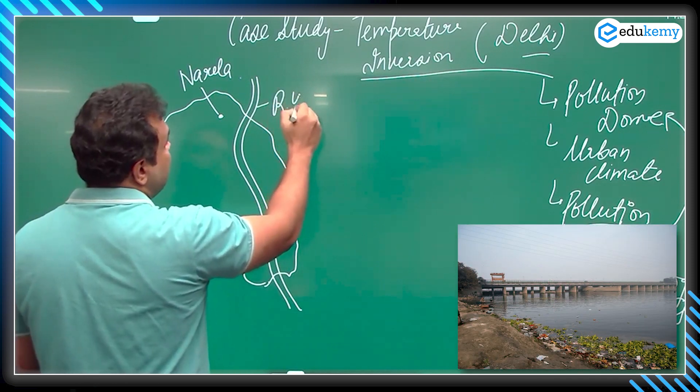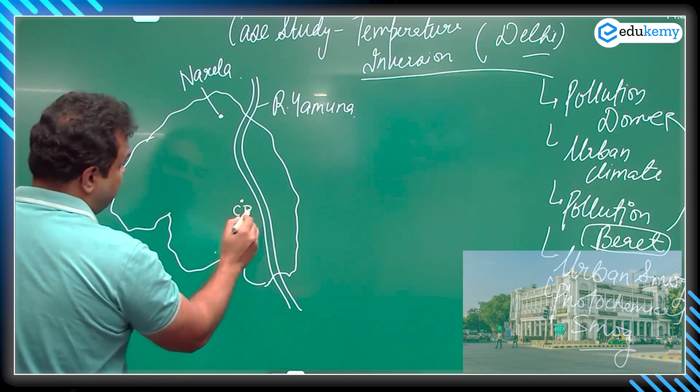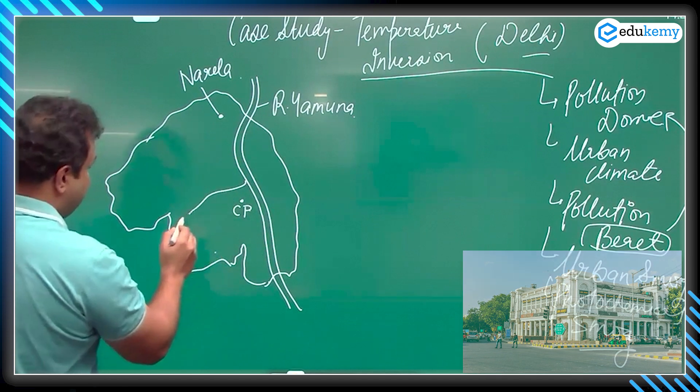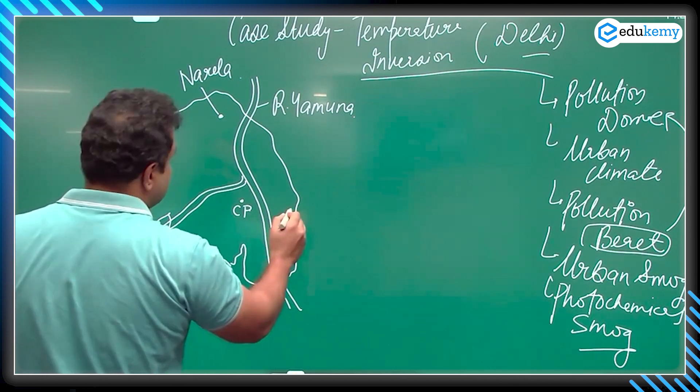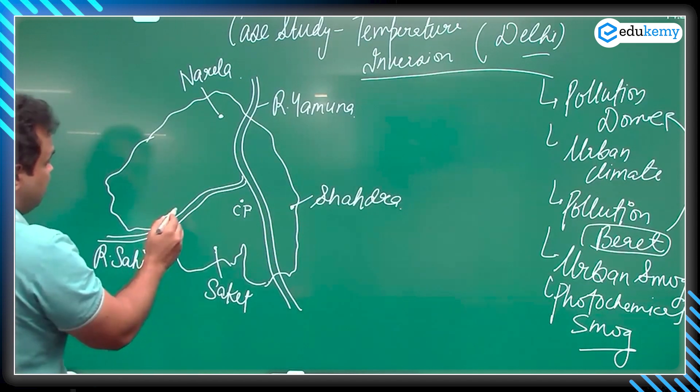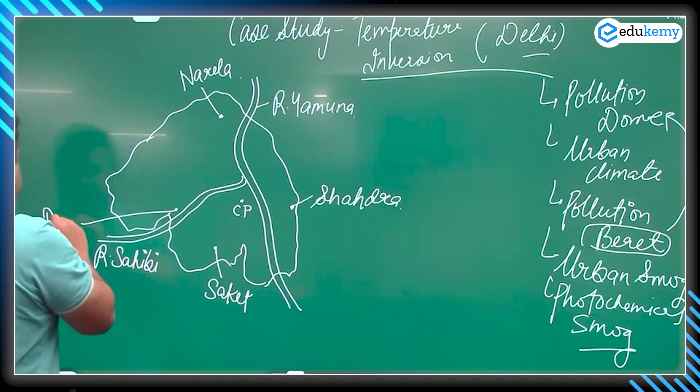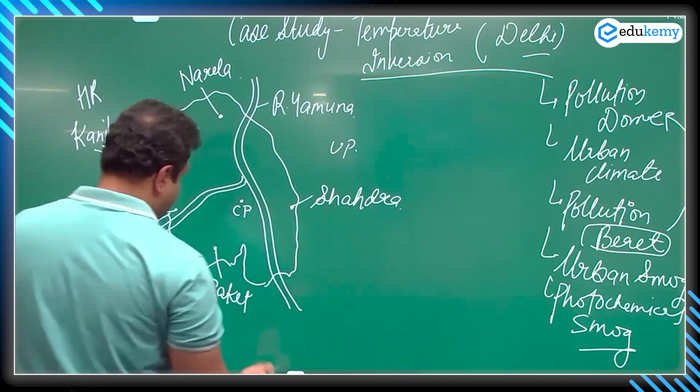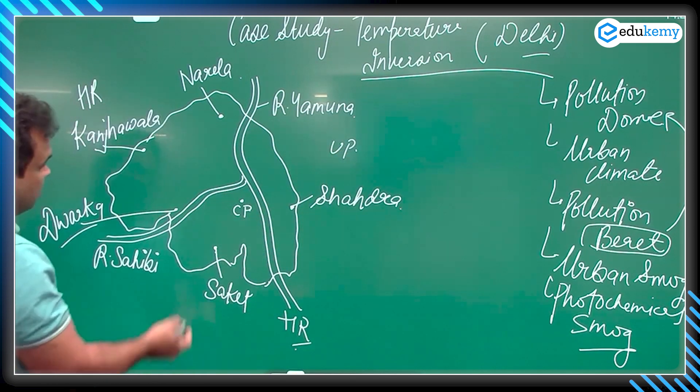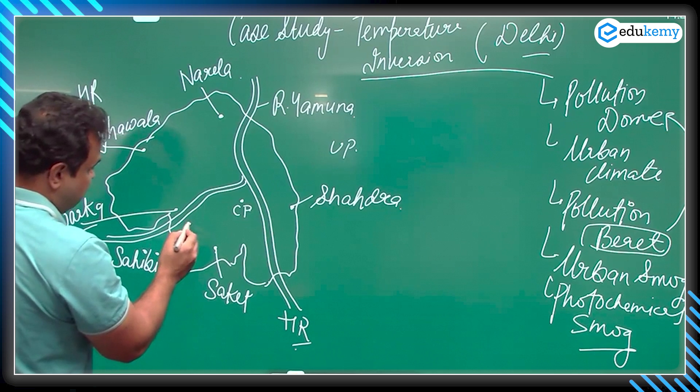This is river Yamuna. This is CP, Connaught Place. We have another river, that is river... And this side we have U.P. North side also Haryana. You can show here the airport.